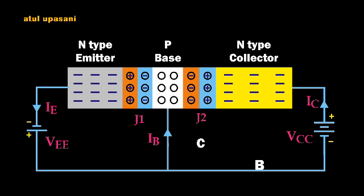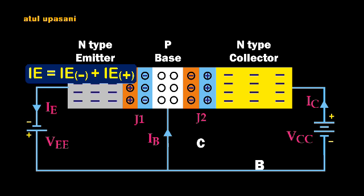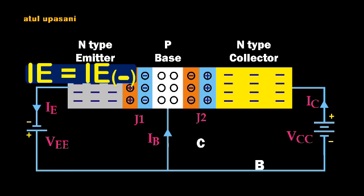At the same time, a few holes from the base move to the emitter, because when an electron moves to a location a hole is created, so holes also move from base to emitter. The net emitter current is due to both electrons and holes, but since the hole current from the base is negligible as holes are minority carriers, all the emitter current can be considered as due to electrons only.